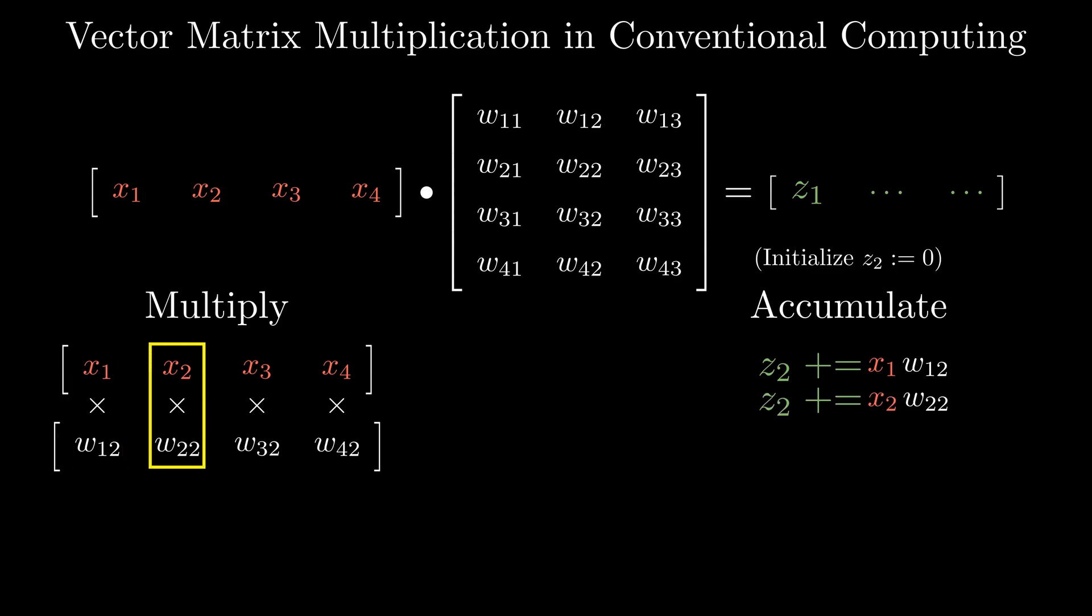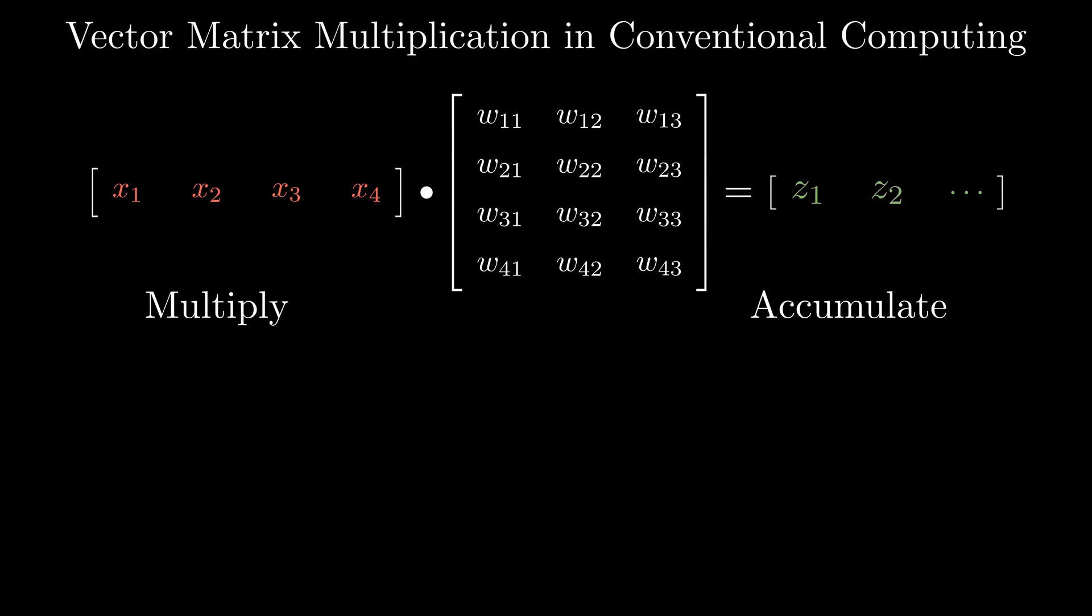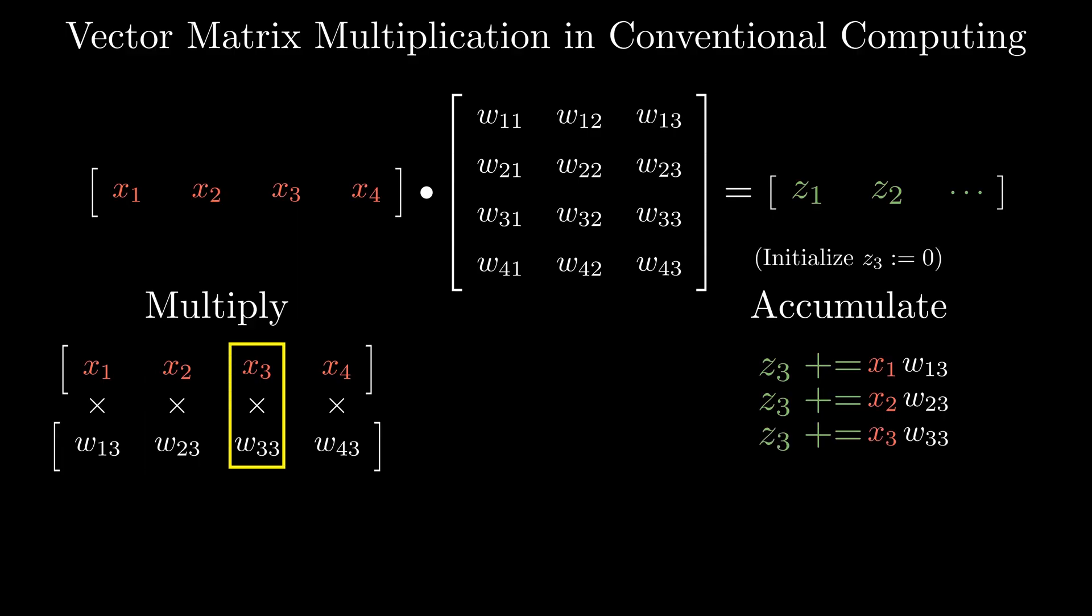And adding the result to a running sum known as the accumulator. The accumulated sum gives one element of the resulting vector. The process is repeated for all the columns of the matrix to obtain the output vector.